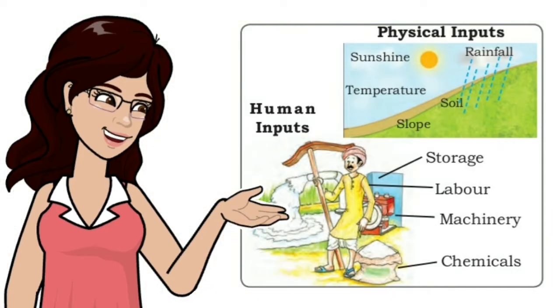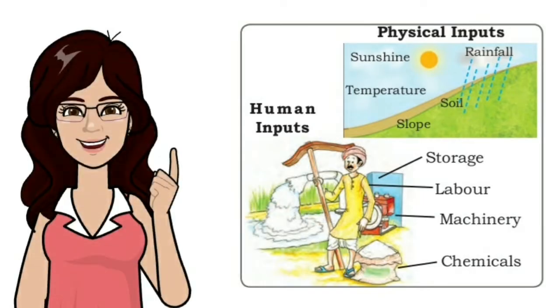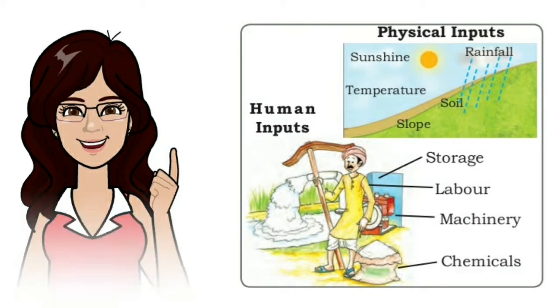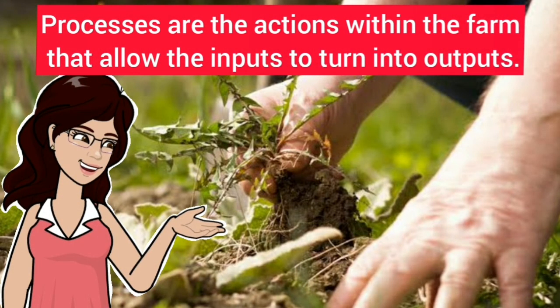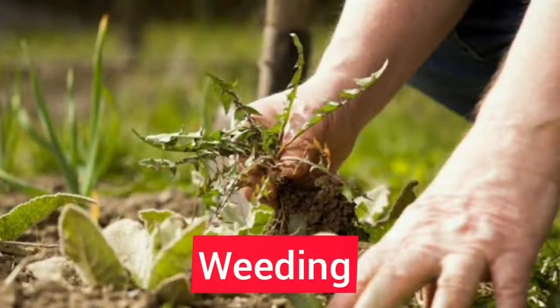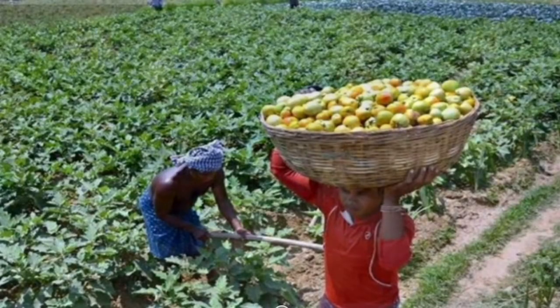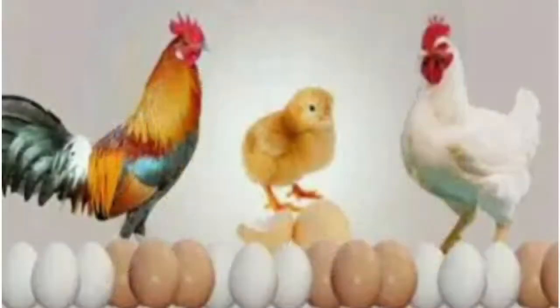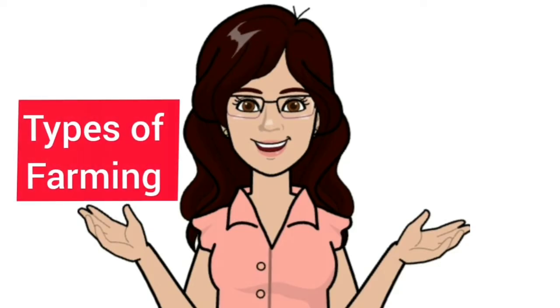The next step is to use these inputs to get output — that is called processes. Processes are the actions within the farm that allow inputs to turn into outputs. It includes sowing seeds, spraying pesticides, irrigating fields, weeding, and harvesting. Finally, we get outputs in the form of agricultural products such as crops, wool, dairy, and poultry products.